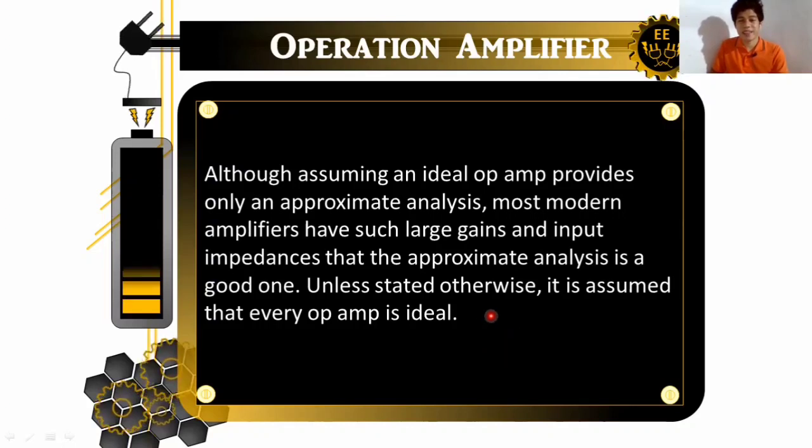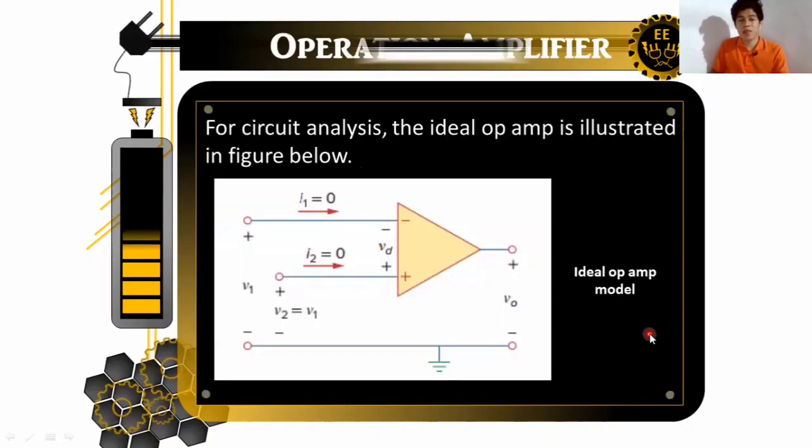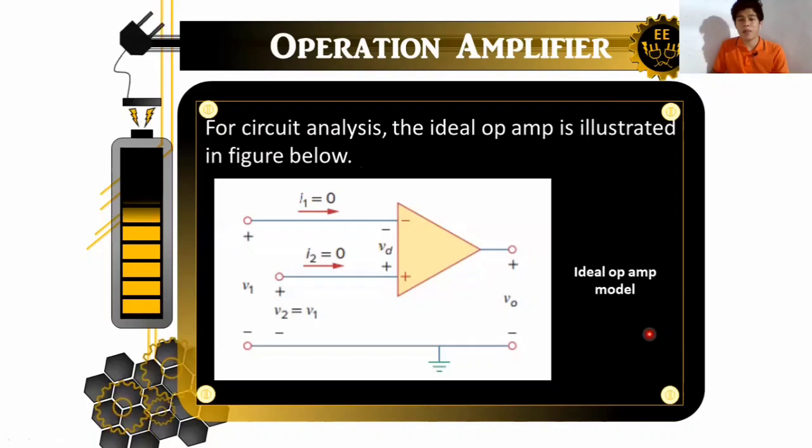Although assuming ideal op amp provides only an approximate analysis, most modern amplifiers have such large gain and input impedance that the approximate analysis is a good one. So unless stated otherwise, it is assumed that every op amp is ideal. For circuit analysis, the ideal op amp illustrated in figure below. So here, we can see the ideal op amp model. So our VP, our V sub N, our VP, and our output. So here, ideal op amp model, I sub 1 is equal to 0, I sub 2 is equal to 0 also, and V sub 2 is equal to V sub 1.